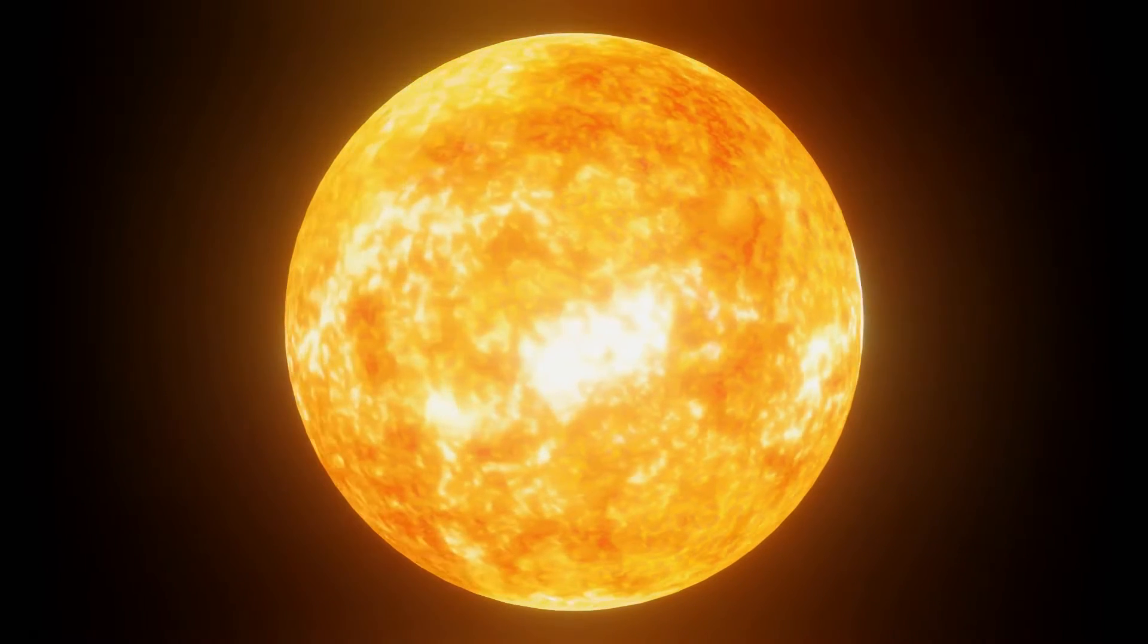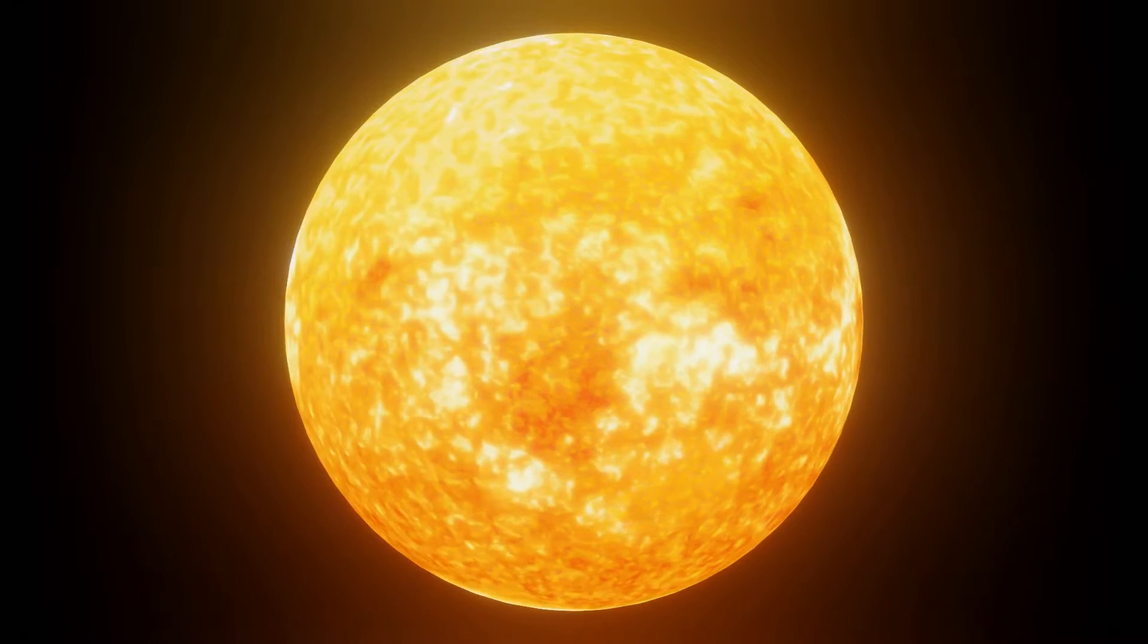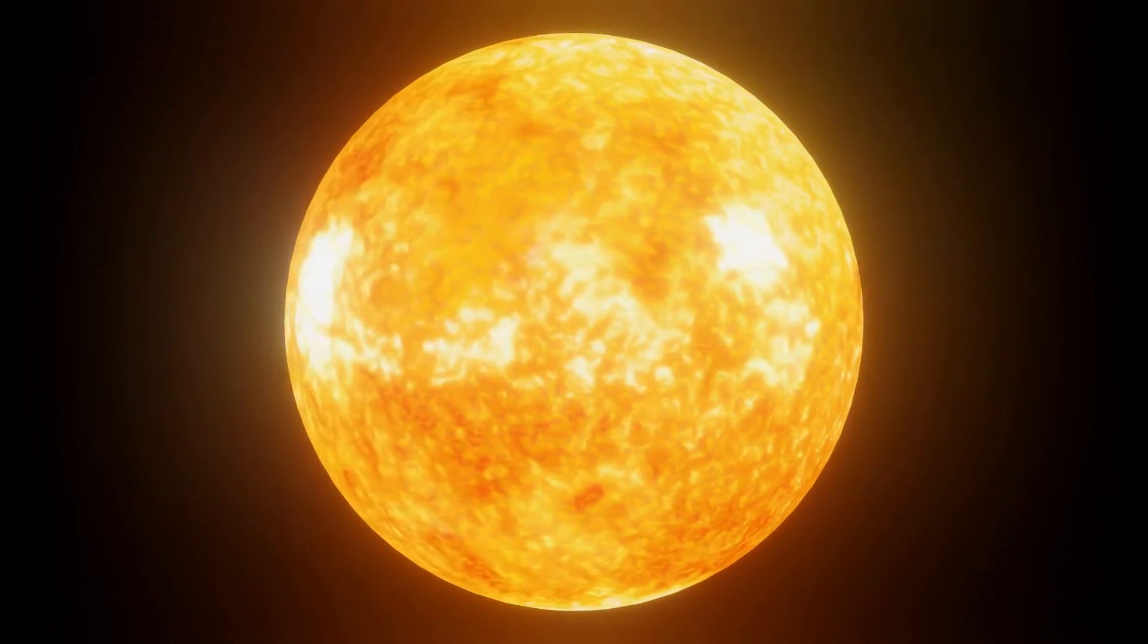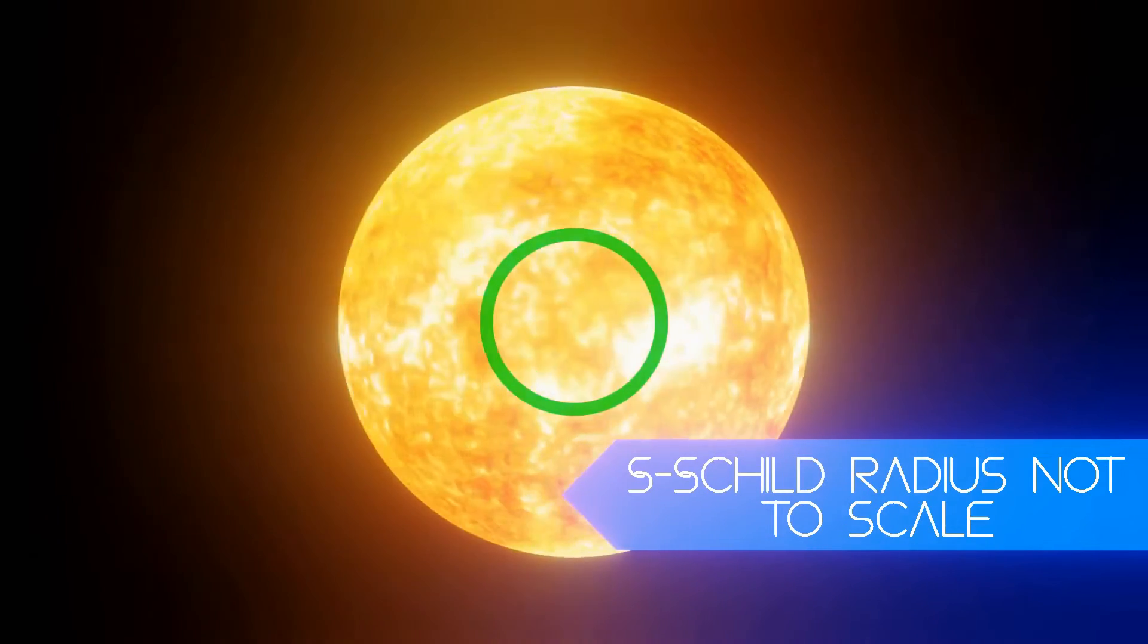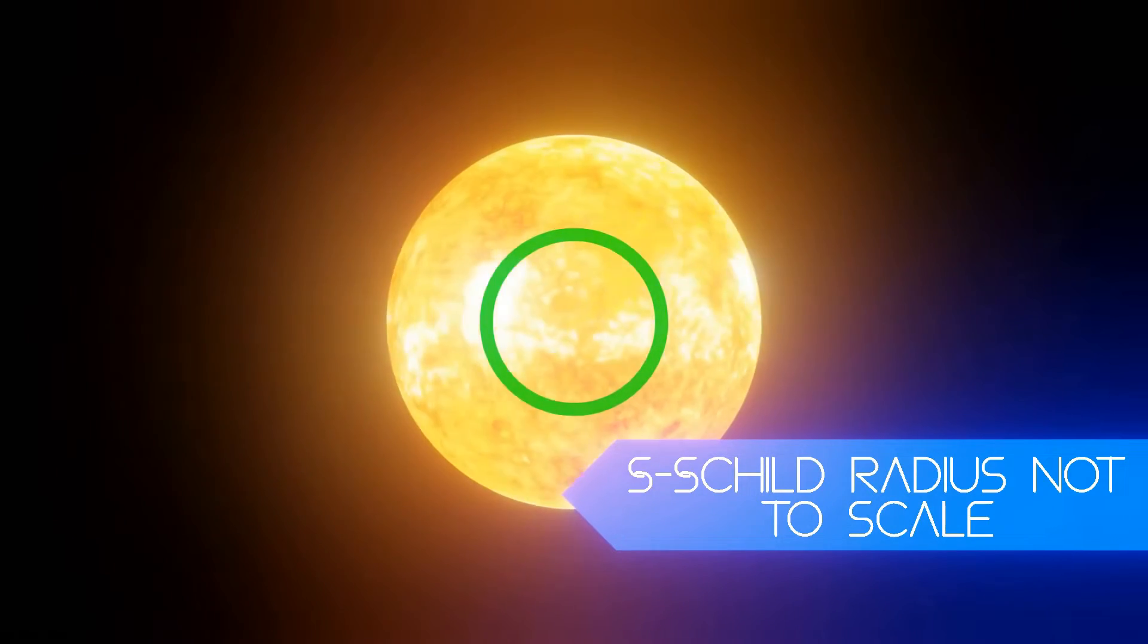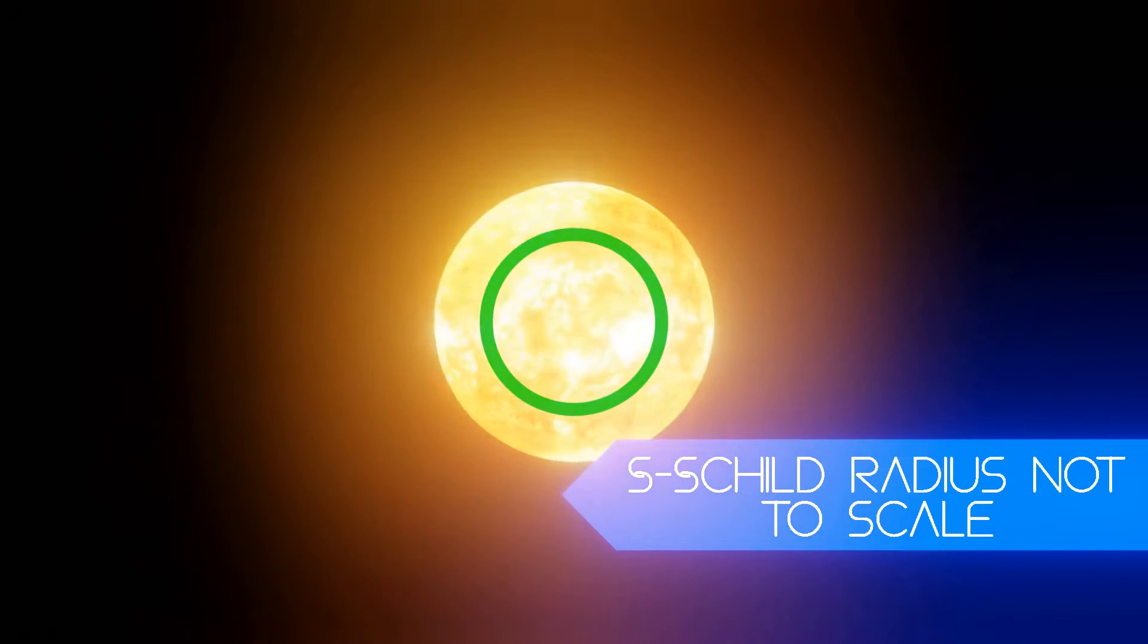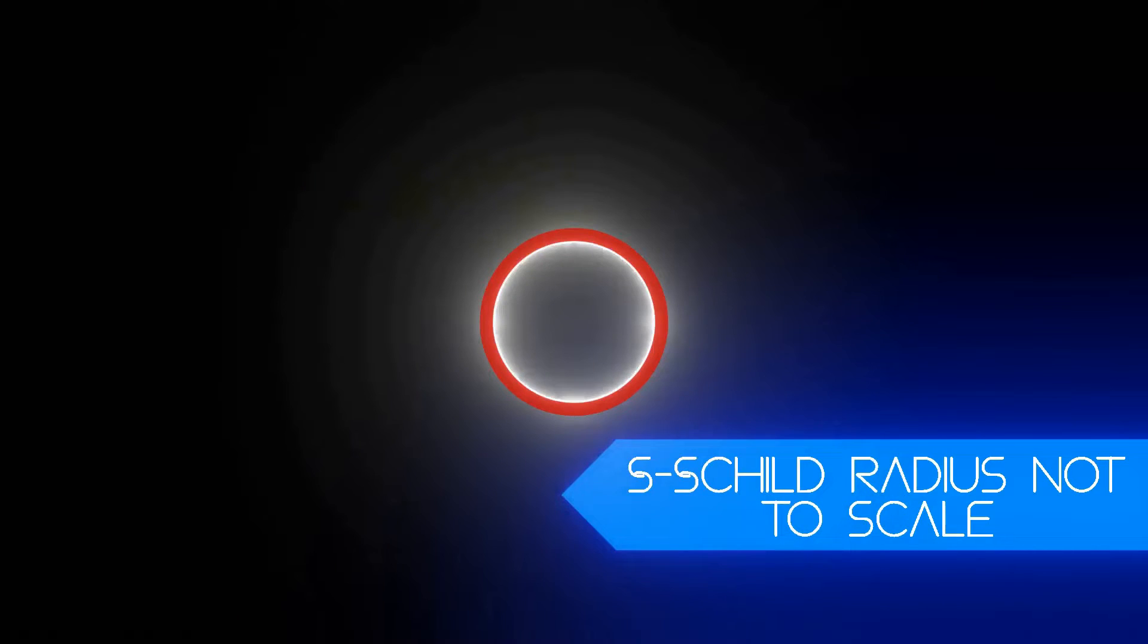All black holes form by an object somehow being compressed smaller than its Schwarzschild radius. The Schwarzschild radius, named after a German physicist called Schwarzschild, is essentially the radius that you would need to compress an object of a certain mass so that the escape velocity equals the speed of light, thus forming a black hole.